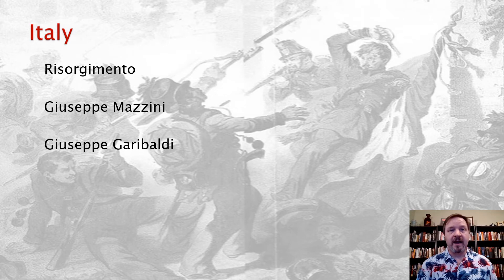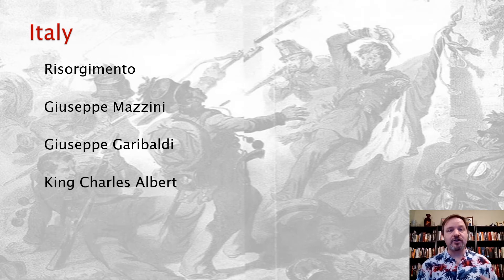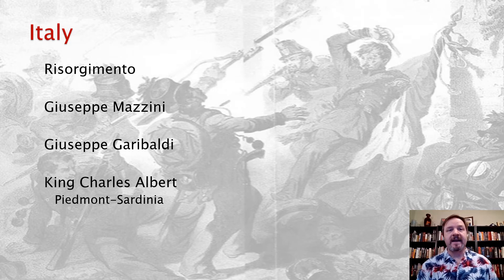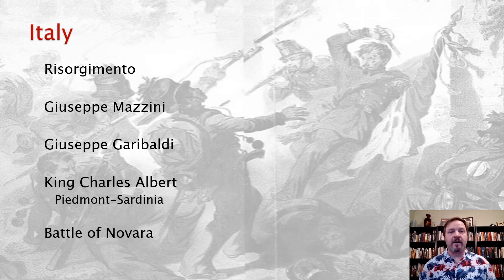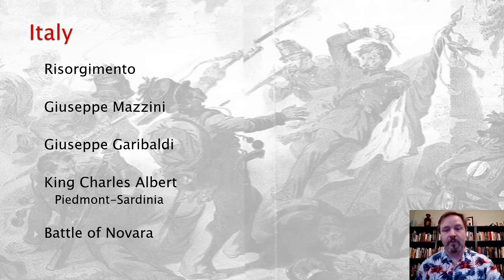In 1849, the French intervened on the side of the pope and crushed this Roman Republic. Only King Charles Albert of Piedmont-Sardinia embraced the Risorgimento. He enacted a liberal constitution and tried to aid the Venetian rebels. But ultimately he was defeated in 1849 by the Austrian army in the Battle of Novara, and the idea of a unified Italy came to an end for now.